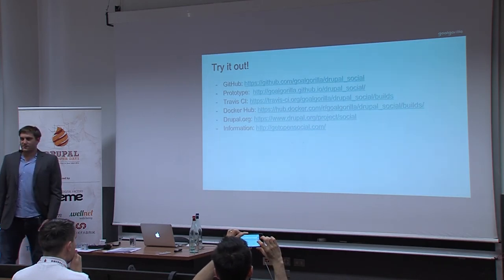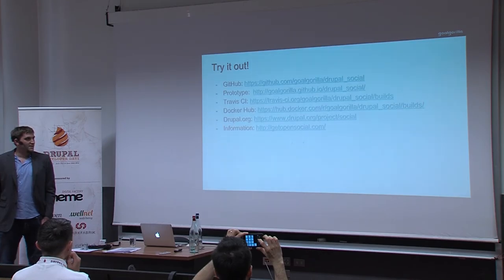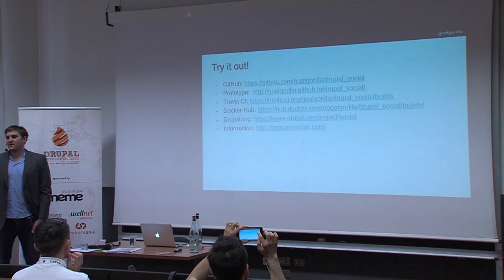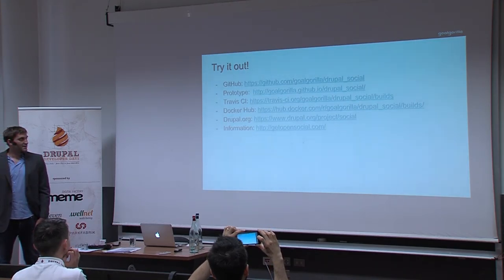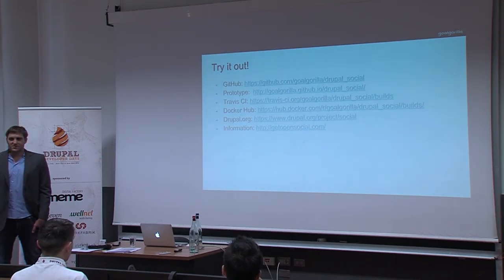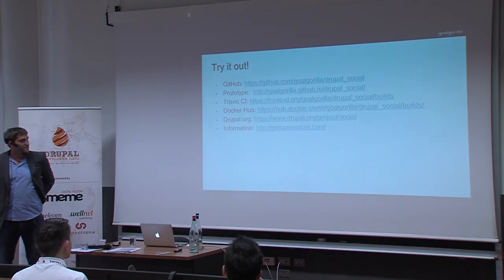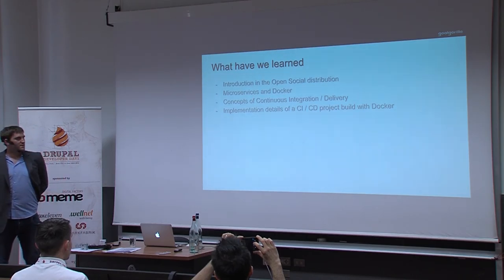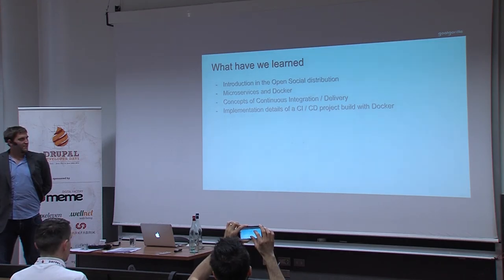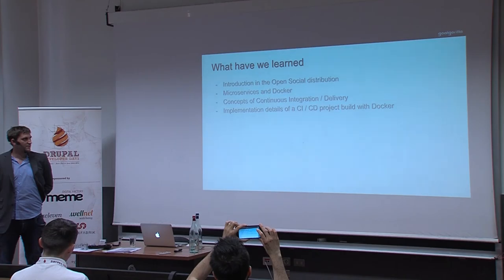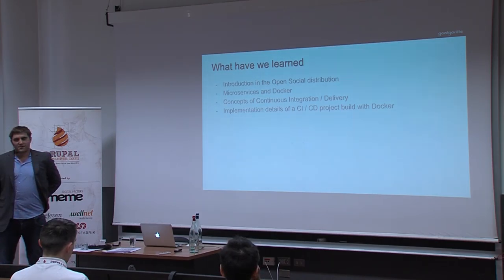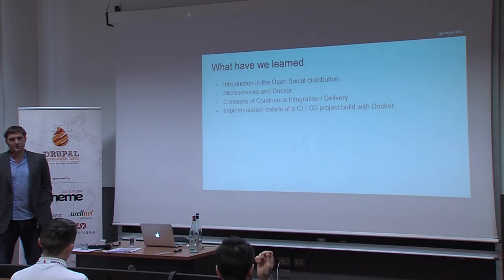We have some links to try it out. We're releasing an alpha version of Open Social tomorrow on Drupal.org. We also have a GitHub where you can play around — everything is open source, including the Travis configuration. Visit getopensocial.com for more information. To summarize what we covered: an introduction to the Open Social platform, microservices and Docker and why they matter in our DevOps environment, the concept of continuous integration and delivery, and our implementation — the Travis feedback really proved worth the effort.